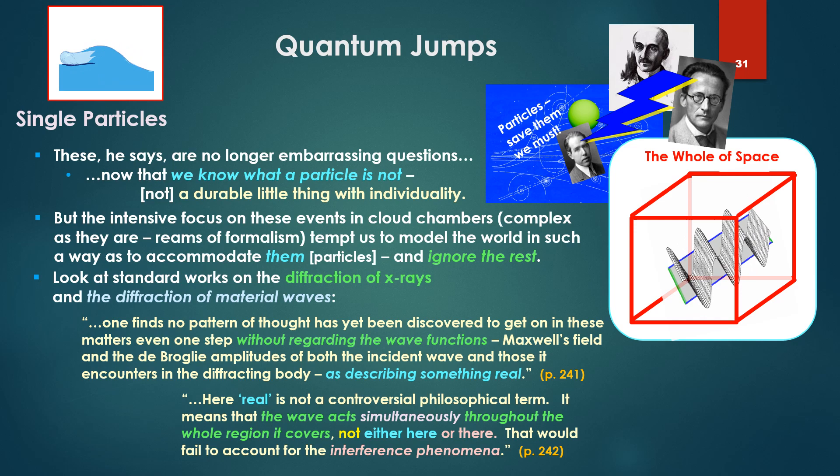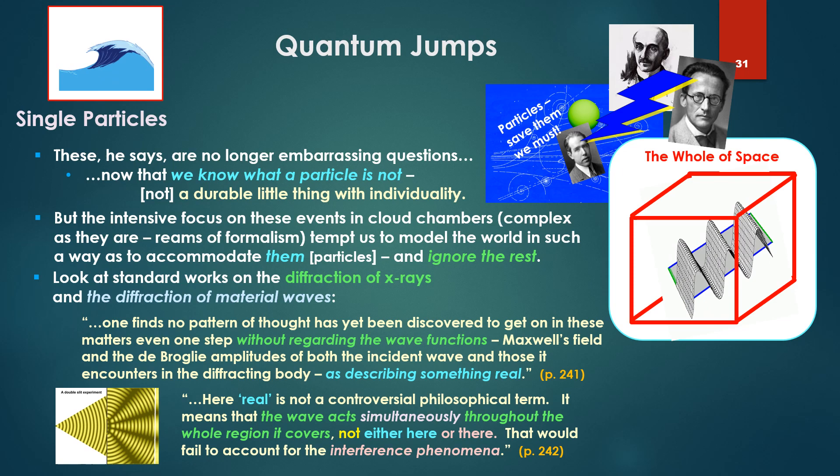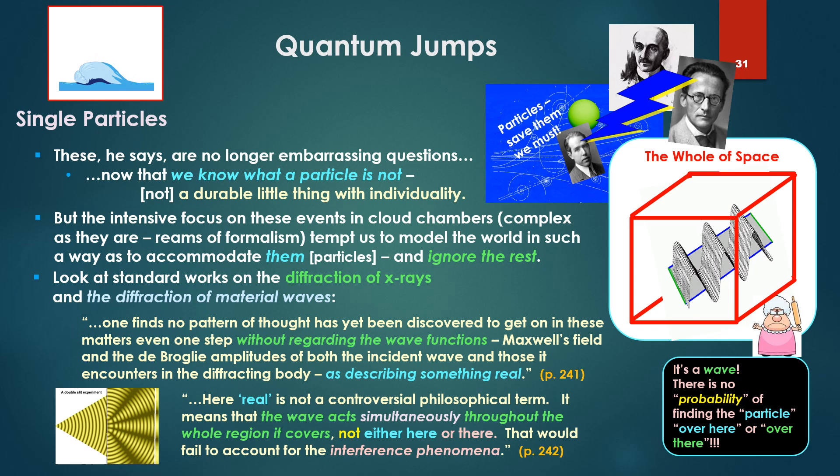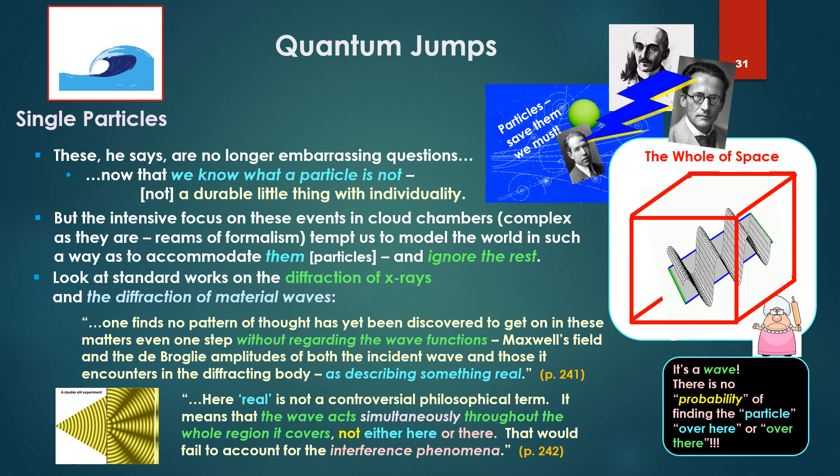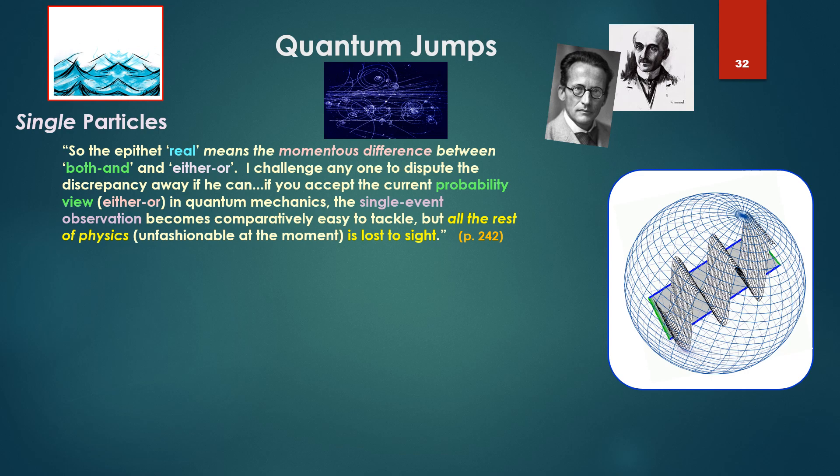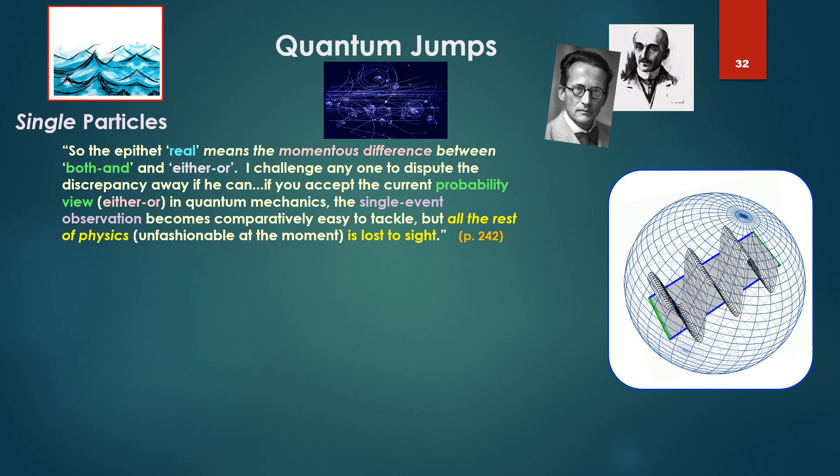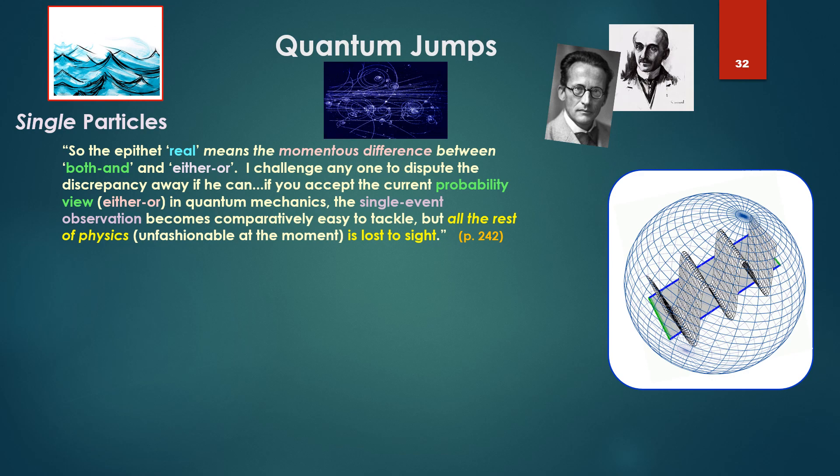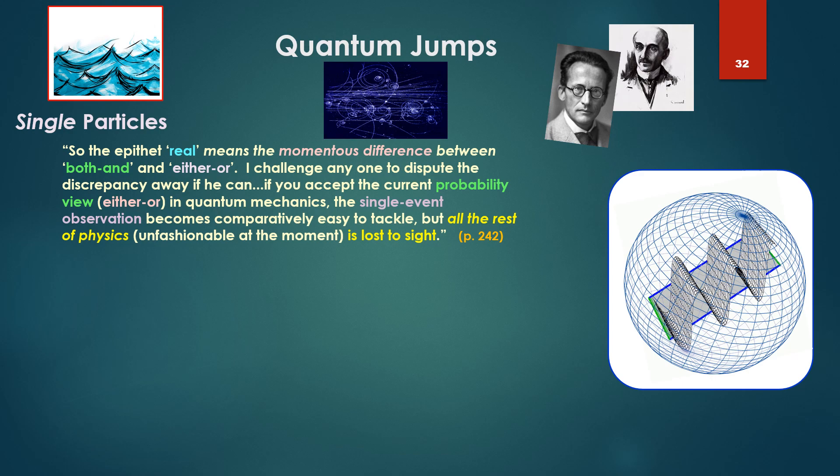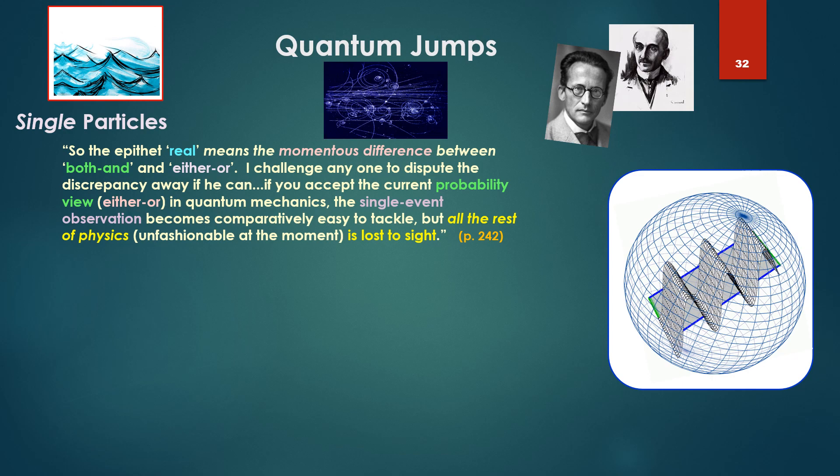Here, real, he says, is not a controversial, philosophical term. It means that the wave acts simultaneously throughout the whole region it covers, not either here or there. That would fail to account for the interference phenomena or need the whole wave acting across the whole space. So it's a wave, there is no probability of finding the particle over here or over there for the probability view. So final paragraph. The epithet real means the momentous difference between both-and and either-or. The momentous difference. I challenge anyone to dispute the discrepancy away if he can. If you accept the current probability view, either-or, in quantum mechanics, the single event observation becomes comparatively easy to tackle. Those little particles in the chambers. But all the rest of physics, unfashionable at the moment, is lost to sight.